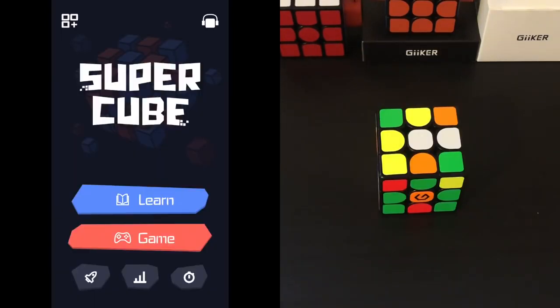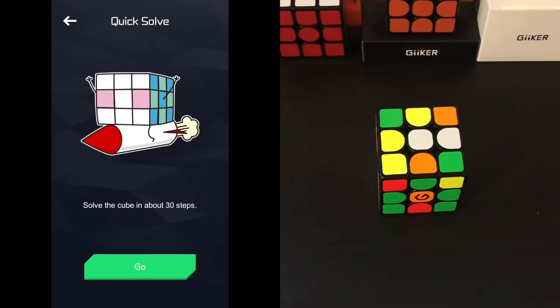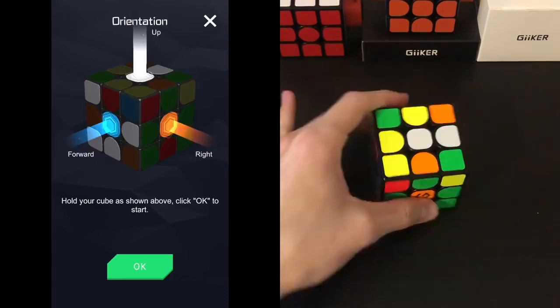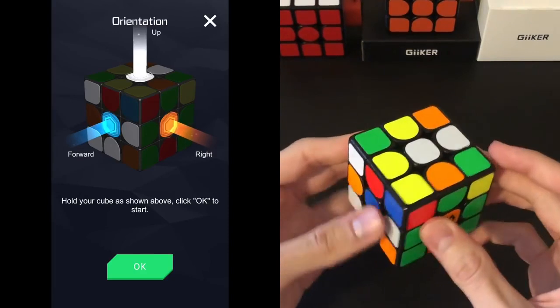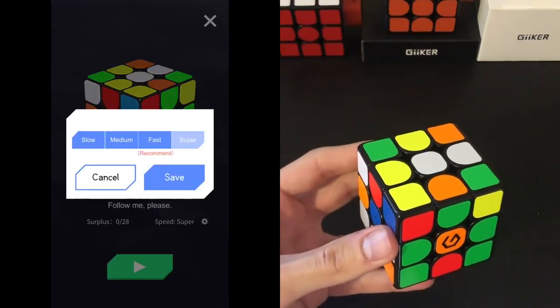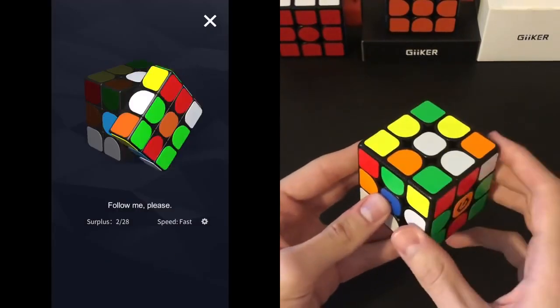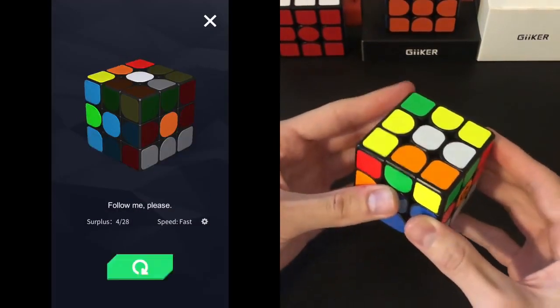On the bottom from left to right, the rocket will simply show you move by move how to solve the cube. This is just in case you don't know how to actually solve it and want to get to the solved state. One feature they've added is to change the speed at which the app makes the turn. So here it wants you to hold the cube a certain way. You're going to click OK and then here you can change the speed from super to fast. And then you follow along move by move.